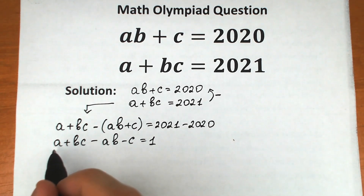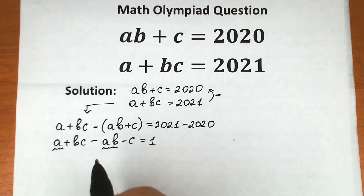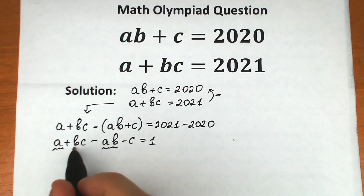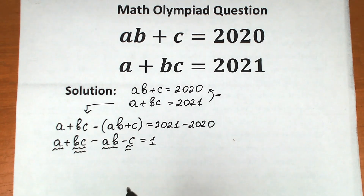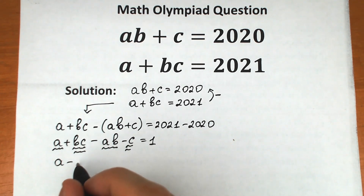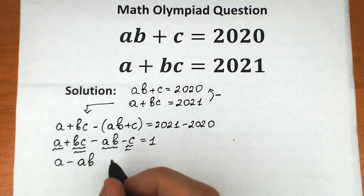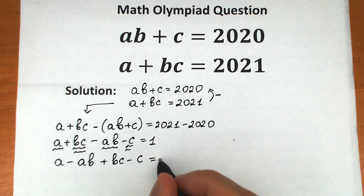Now let's group the terms with a together, and the terms with c together. We get a minus ab plus bc minus c equal to one.